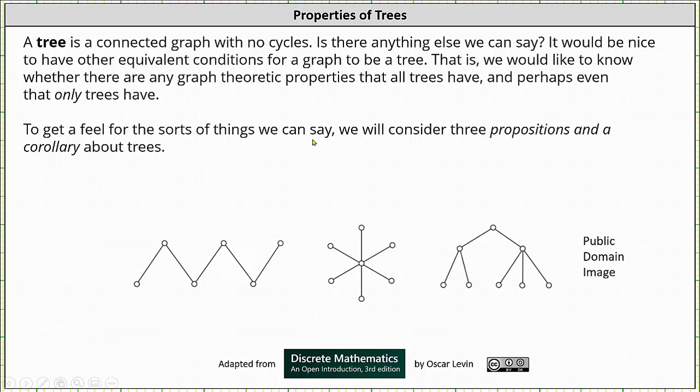To get a feel for the sort of things we can say, we will consider three propositions and a corollary about trees. If you want to see the proofs of the three propositions, please refer to the textbook. And below we have three more graphs of trees. Notice all graphs are connected and contain no cycles.